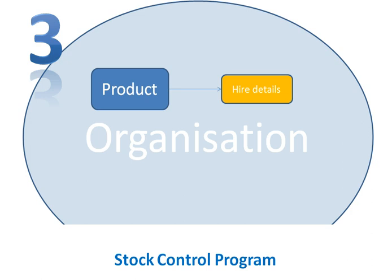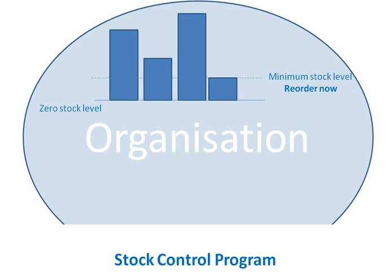Stock control programs can also be to do with the use of goods, and the best example of that is when you're hiring something out — hiring out a piece of machinery, for instance. Some of the details you'll need to keep on that will be kept by a stock control program. When looking at stock control programs, the majority nowadays — especially in warehouses — deal with order processing, defined as keeping details of stock levels and managing the order or reorder of stock. That graph really gives a clear example of what happens in this fourth section on stock control programs.